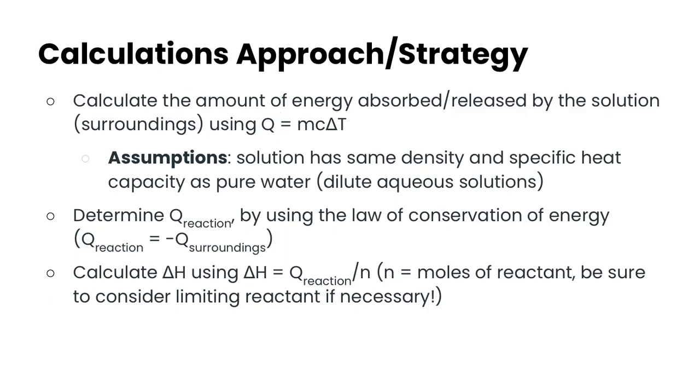So to take a look at how we're going to approach these calculations, they're a little bit more complex. First, we want to take a look at using q equals mc delta T, how much energy is absorbed or released by the solution, which is our surroundings. So here we're making those assumptions that we have the same density and specific heat capacity as pure water, even though we're talking about dilute aqueous solutions. We're then going to determine the q of the reaction by using the law of conservation of energy. So the q of the reaction is always going to have the negative sign of the q of the surroundings. Basically, what that means is what's happening in the surroundings, the opposite is happening within the reaction. And then we're going to calculate delta H using delta H which is the q of the reaction divided by moles of the reactant. And if you have a limiting reactant, you do need to consider it here.